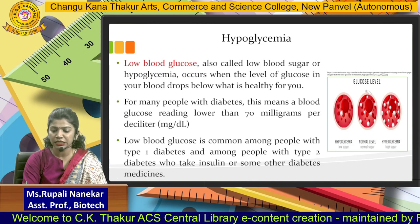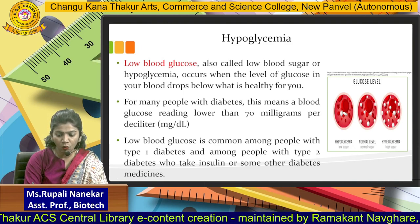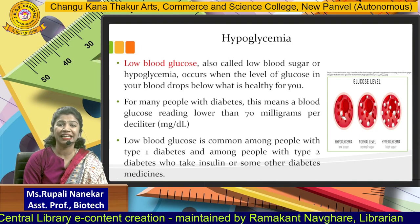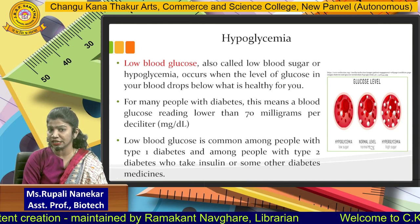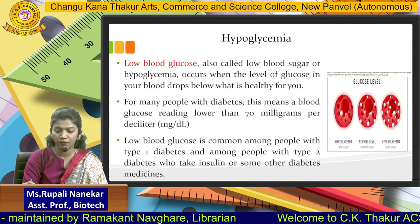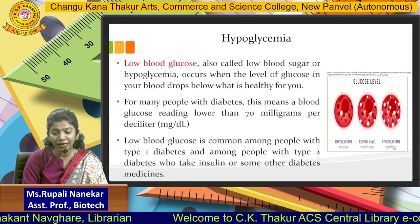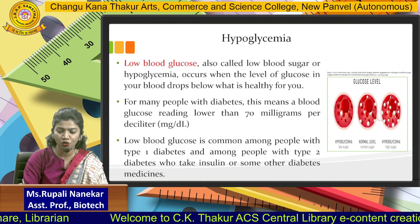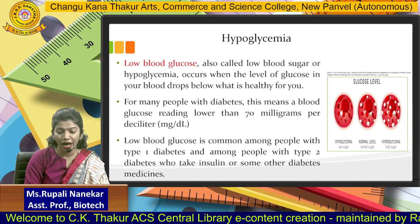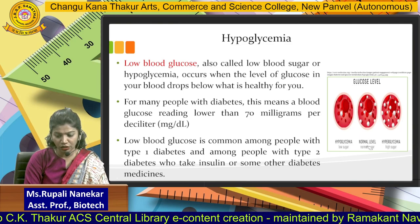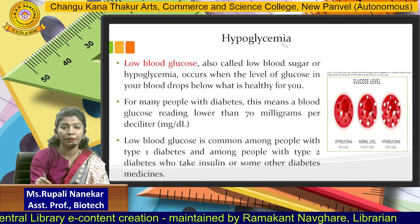On your screen you can see the glucose level diagram illustrating hypoglycemia, where the white color representing sugar is very sparse. In the normal sugar level, there is even distribution in the blood. In hyperglycemia there is a lot of sugar. These are the three different conditions: hypoglycemia, normal sugar level, and hyperglycemia. Today we are going to talk about hypoglycemia.